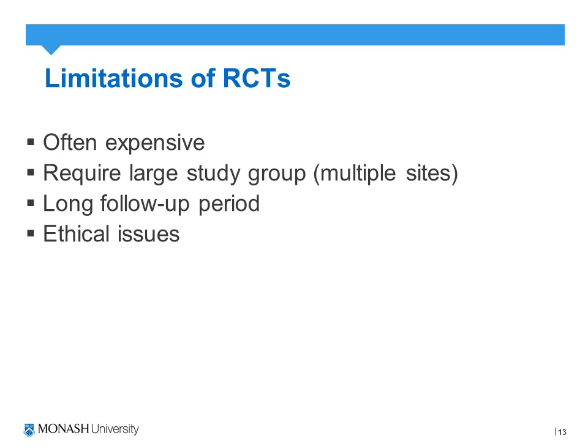The limitations of RCTs: they can often be quite expensive. To generalize results to the wider community, a large sample size and potentially multiple sites are required. Ethical issues can also arise. Depending on the disease or intervention, the follow-up time and potential for dropouts — i.e., attrition bias — may also be a factor in the study.